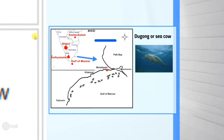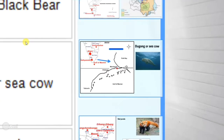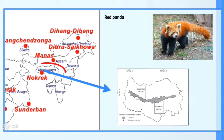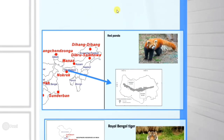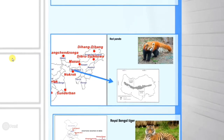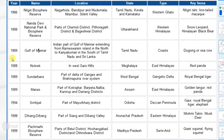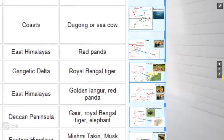The next one is located in Meghalaya and the name of that biosphere is Nokrek. The main key fauna of Nokrek is the Red Panda.